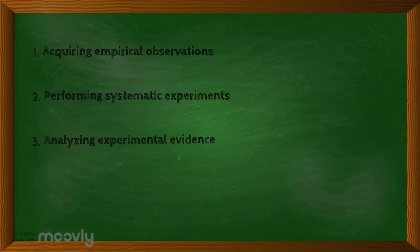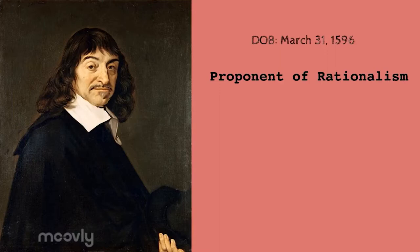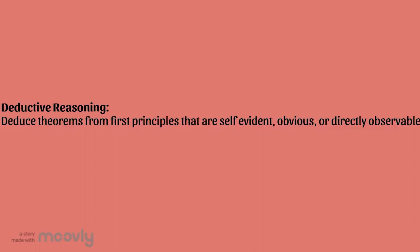Up next, we have René Descartes. He was born in 1596 and is a proponent of rationalism, which is the belief that there are ways we can gain knowledge independent of sense experience, and that knowledge can come from innate ideas, reason, and deduction. While Bacon believed in inductive reasoning and an empirical model of scientific discovery, Descartes believed mainly in deductive reasoning and a rational model of scientific discovery. He also believed that the universe works like a huge machine, and if you were able to understand the basic laws of the universe, you could deduce how anything will act.